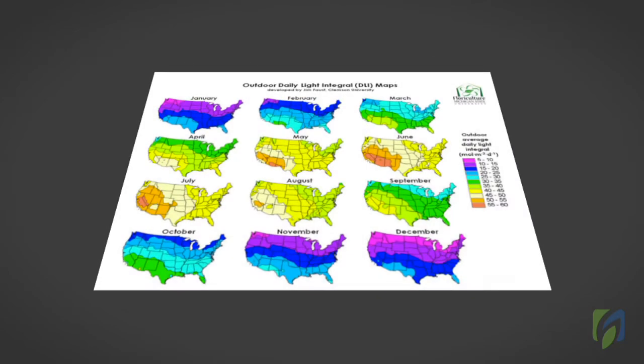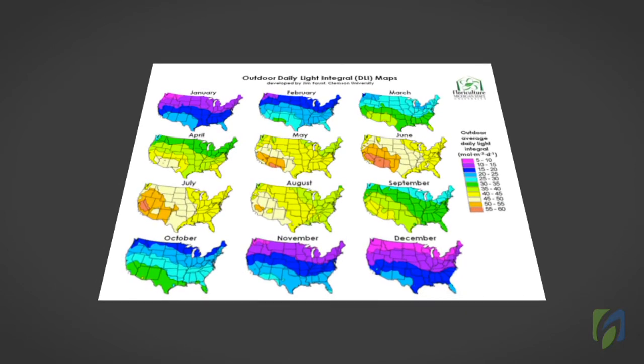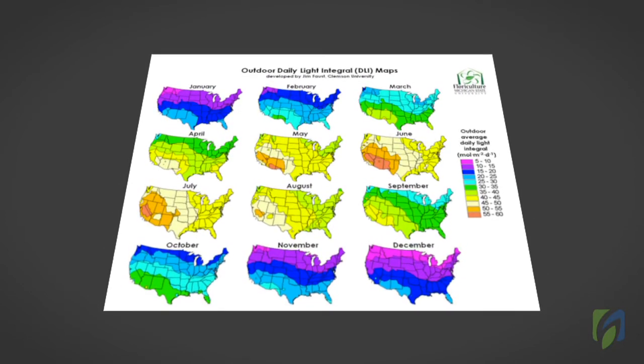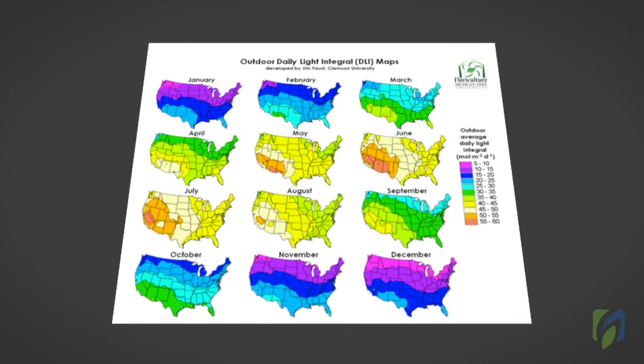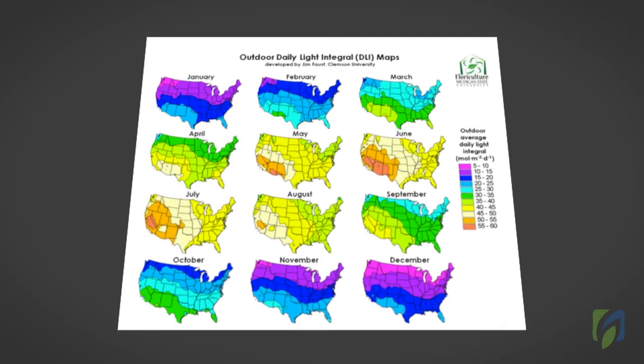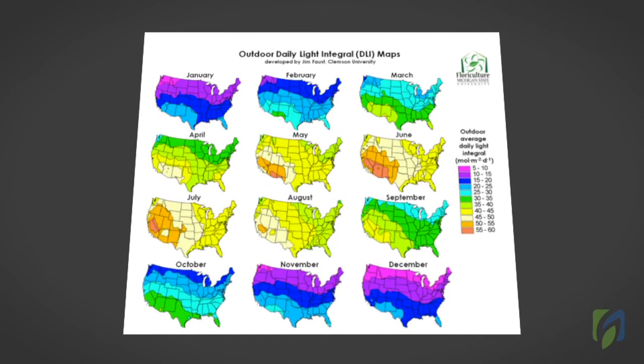Greenhouse growers can estimate the outdoor DLI levels for their operations by locating their facilities on a DLI map provided by Clemson University. These maps show monthly outdoor DLI throughout the United States.